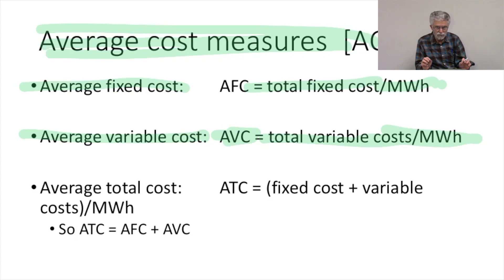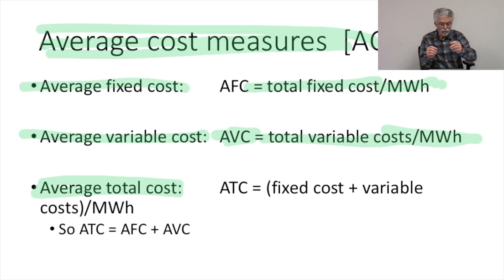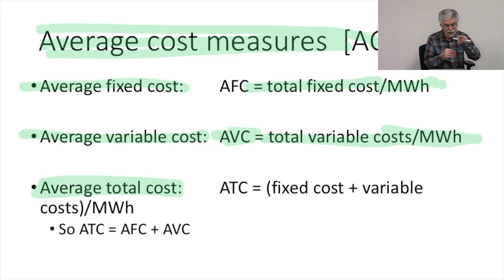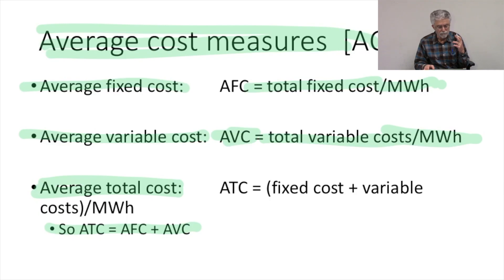What's interesting is that there's a constant relationship between our average total costs, our average fixed costs, and our average variable costs. Our average total costs are just the sum of our average fixed costs and our average variable costs. So for any given capacity factor, we can calculate our average total cost by adding up the average fixed costs — that monthly payment we have to make — plus the payment we make per megawatt hour generated. It's a relationship we'll come back to time and again as we go through our cost calculations.